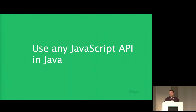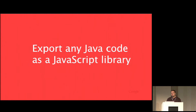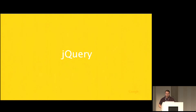JS Interop is the ability to use any JavaScript API — whether it's part of the browser or in some third-party JavaScript library — from Java, with as little to no boilerplate code as possible. It also provides the ability for you to write code in Java which can be consumed by other JavaScript libraries or JavaScript developers. To give an example, let's take one of the oldies but goodies: jQuery.